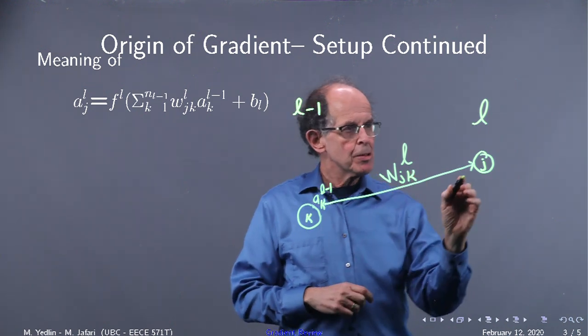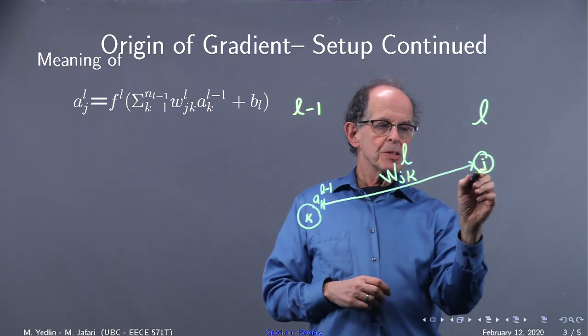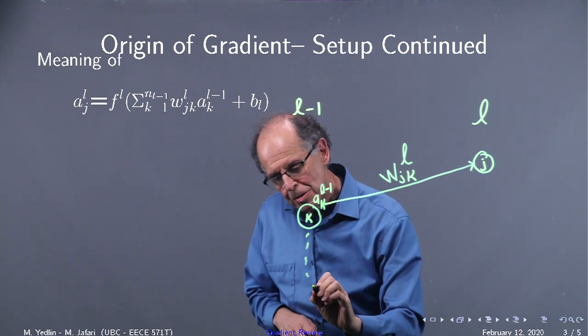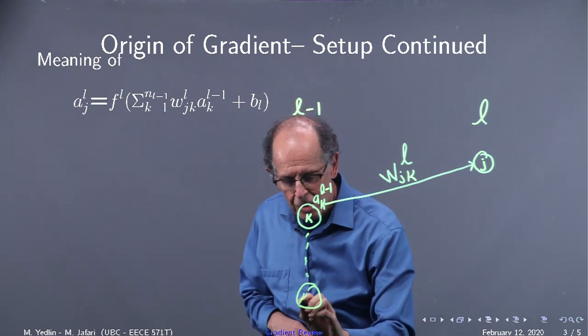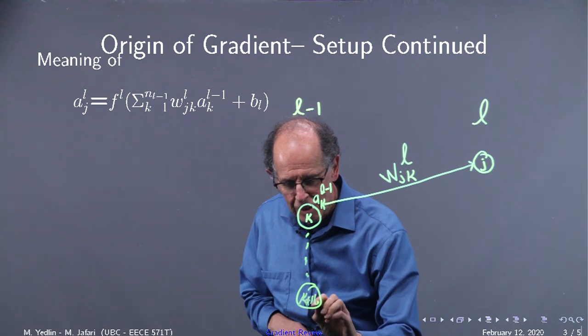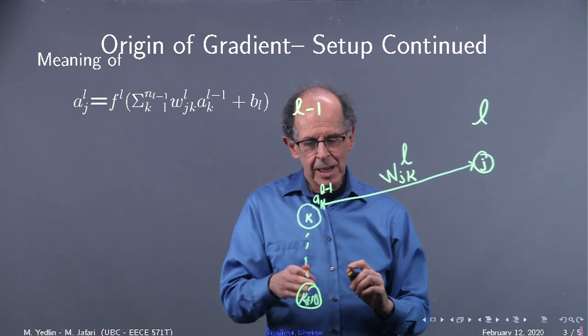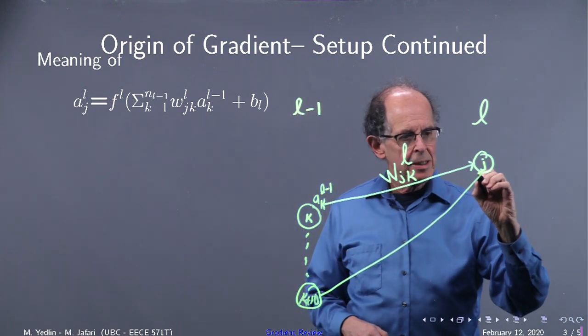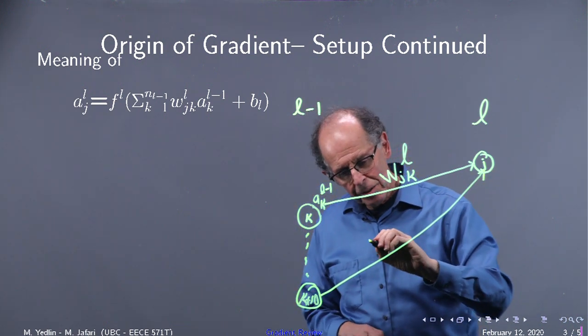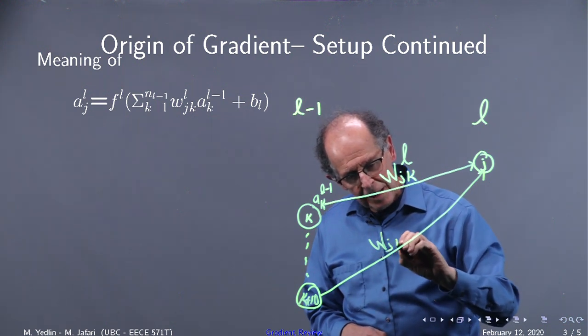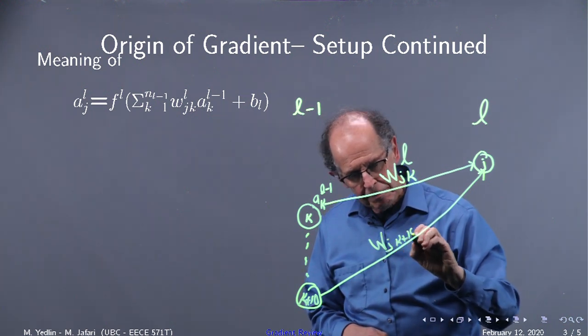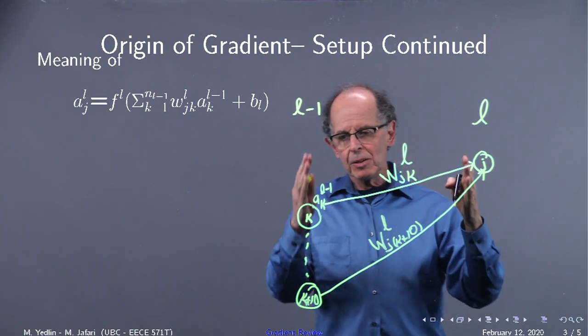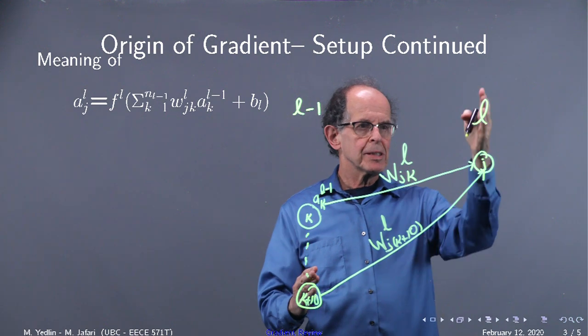Now, of course, the jth neuron receives outputs from other neurons in the l minus one layer. So say this is the k plus ten, ten lower down than k. And that's going to also transmit with its weight here, and that's going to be wj k plus ten, the index, and l, meaning going from the l minus one layer to the lth.